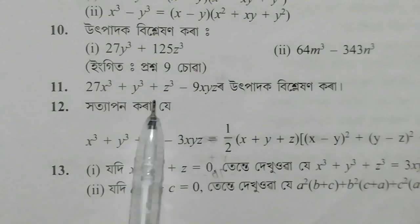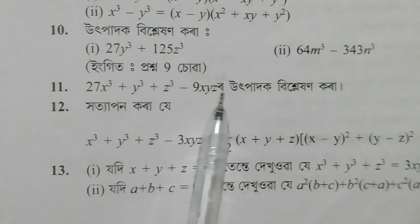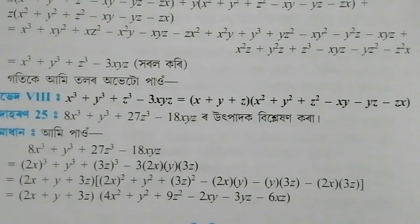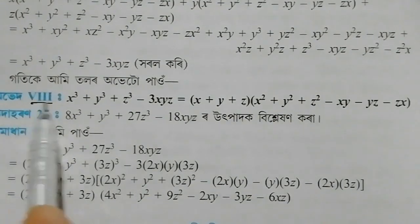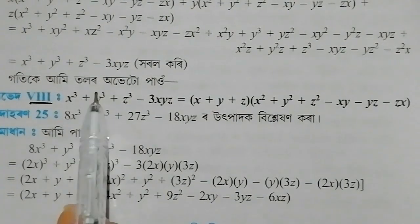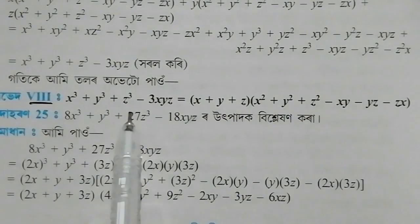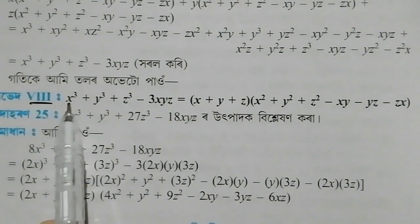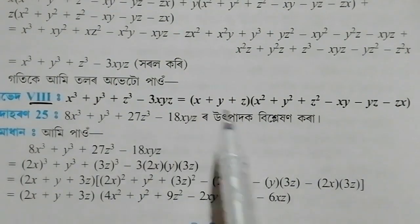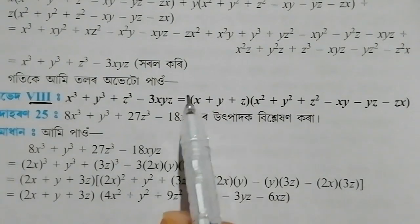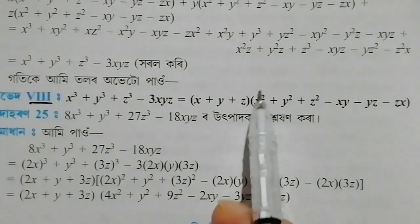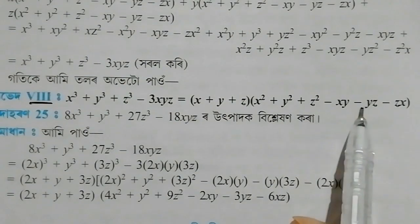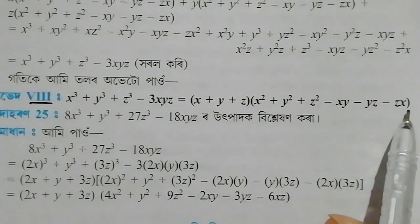The question is: 27x³ plus y³ plus z³ minus 9xyz. This question involves the identity x³ plus y³ plus z³ minus 3xyz.